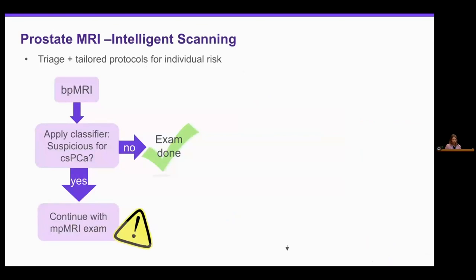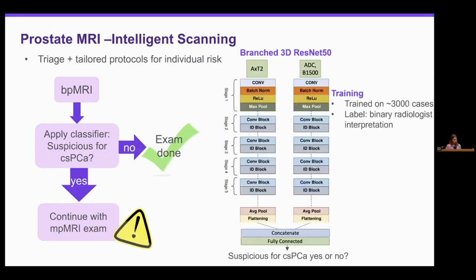This figure on the left illustrates the proposed triage protocol. We have the biparametric MRI protocol, we apply a classifier — if the exam is deemed not suspicious for clinically significant prostate cancer, then we don't do any more scanning and we don't administer contrast. Otherwise, we continue with the full multiparametric exam. The classifier we're using for this task is a 3D ResNet — a 3D convolutional neural network. It is a branched model, extracting features from our axial T2-weighted image and from our diffusion-weighted images, then concatenating features into a classification head, acting as a binary classifier.